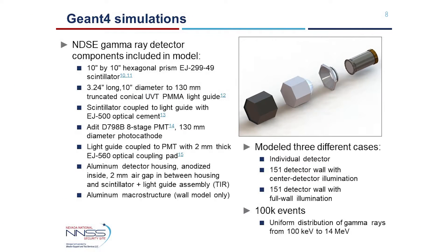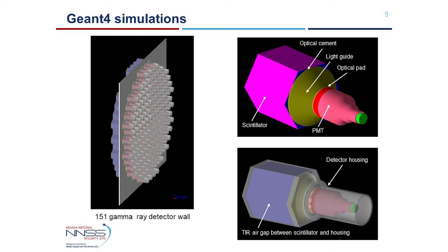The NDSC gamma ray detector components included in the model are shown here. This includes the 10-inch by 10-inch hexagonal prism scintillator coupled to a UVT truncated cone light guide, the 8-stage photomultiplier tube, the housing components, and the detector stand. We model three different cases: an individual detector, a 151-detector wall with only the central detector illuminated, and a 151-detector wall with the full three-meter illumination. These figures are 3D renderings of the configurations as modeled in Geant4. The top right figure is the nominal hexagonal detector without the housing.